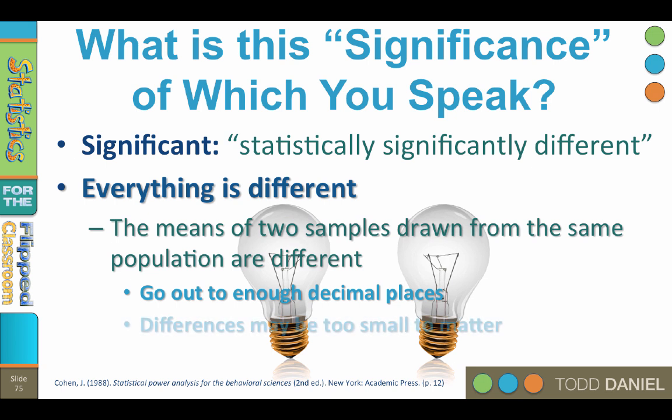On the other hand, many of these differences are too small to matter in the real world. So knowing that two samples of the same size drawn from the same population are going to be different, we want to know, are they really different? Are the differences greater than what would be expected by chance or measurement error? Are they statistically significantly different?